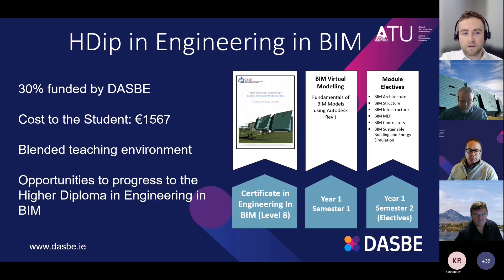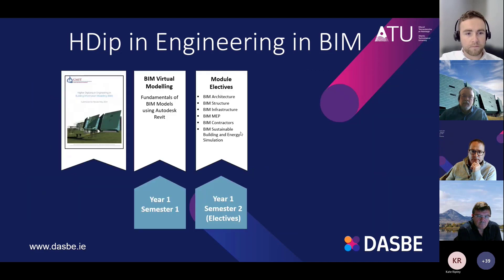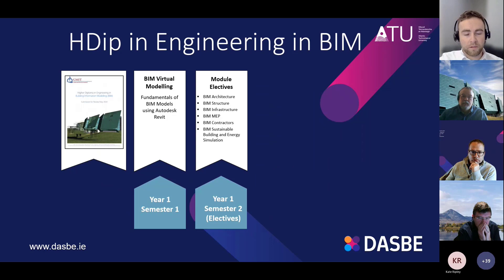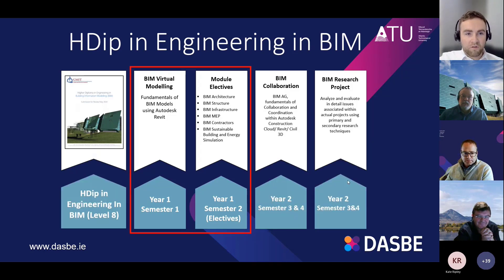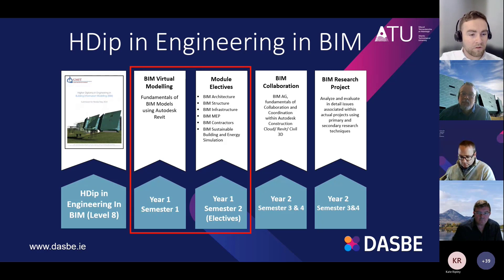This is a blended program — half online and half on campus. Students who complete this program can continue on and move to semester 3 of the Higher Diploma in Engineering and BIM. The modules shown in red are those included in the certificate. Once you complete these, you can move on to the BIM Collaboration Module and the BIM Research Project as part of the HDIP. That's the route from the certificate in Engineering and BIM through to the Higher Diploma.